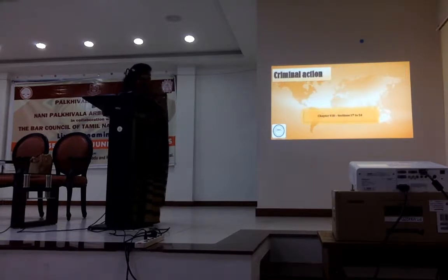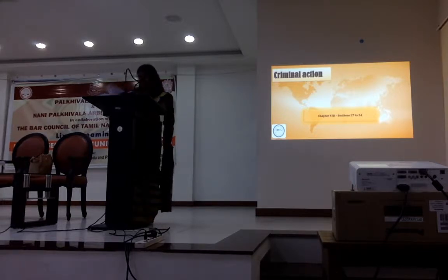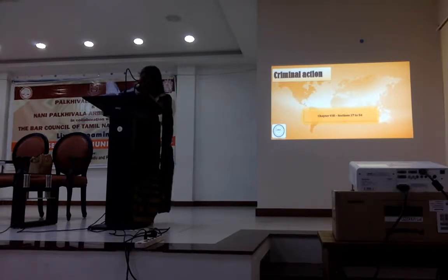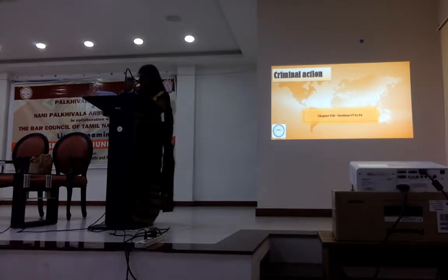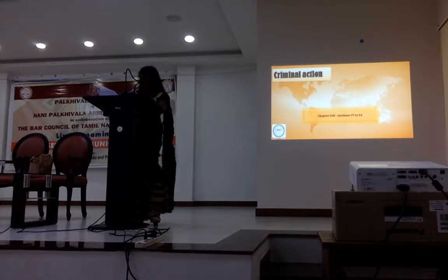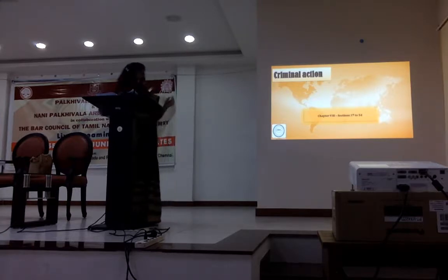For criminal action, it is contemplated in Chapter 8, Sections 37 to 54. There is a wide range of criminal actions prescribed under the GI Act — falsely applying a geographical indication, false geographic indications, selling goods with a falsely described geographical indication, and the list goes on.